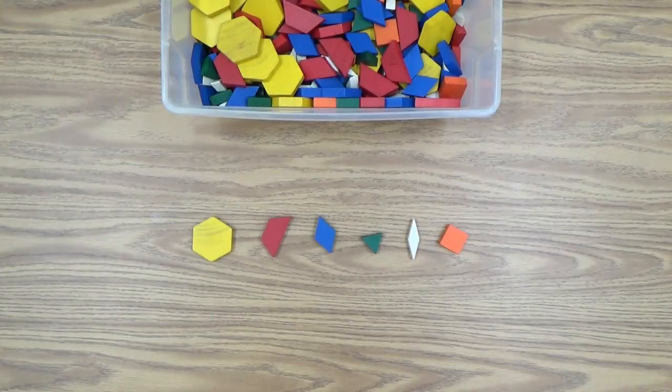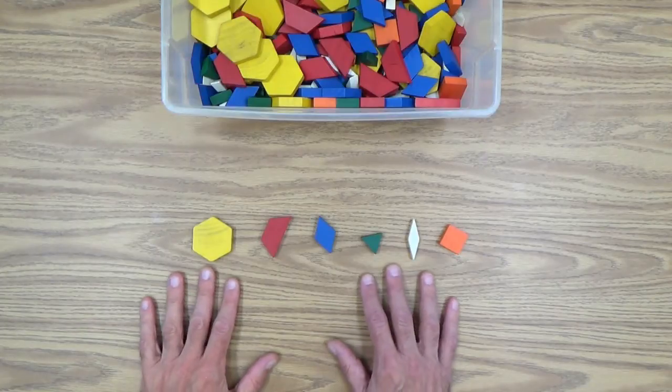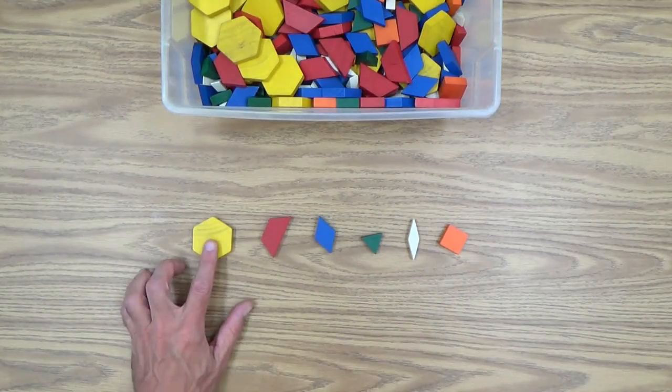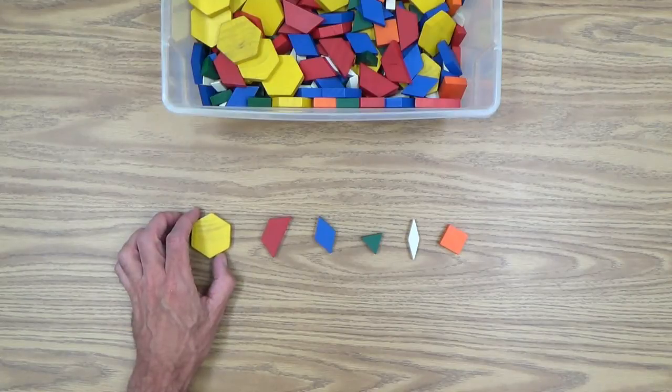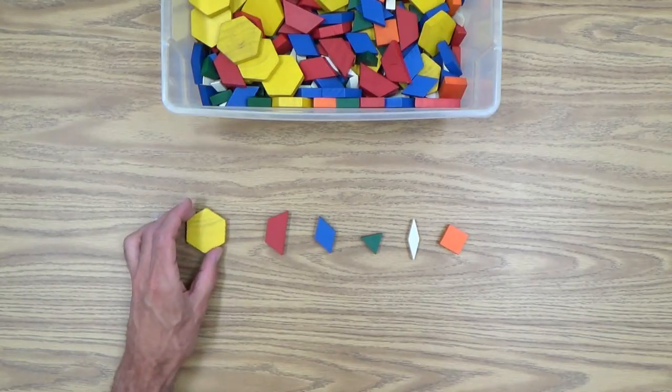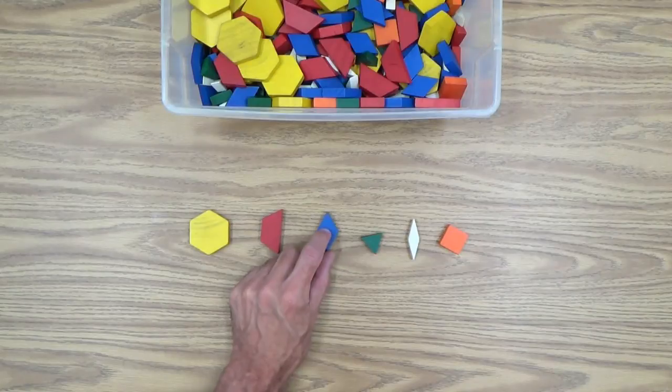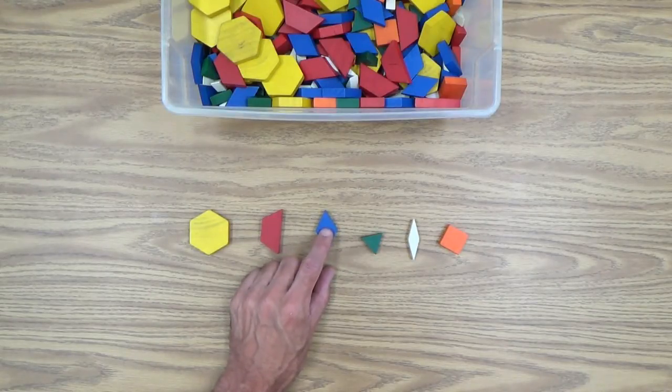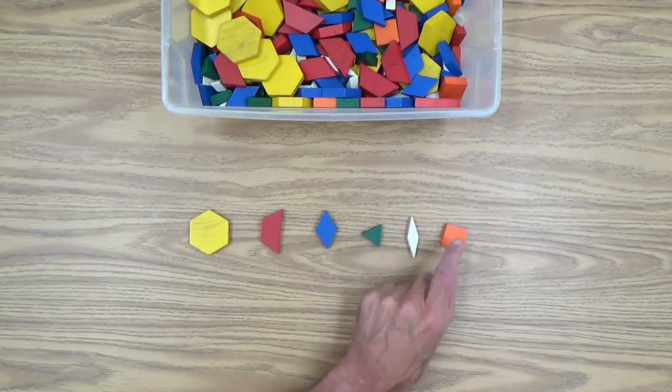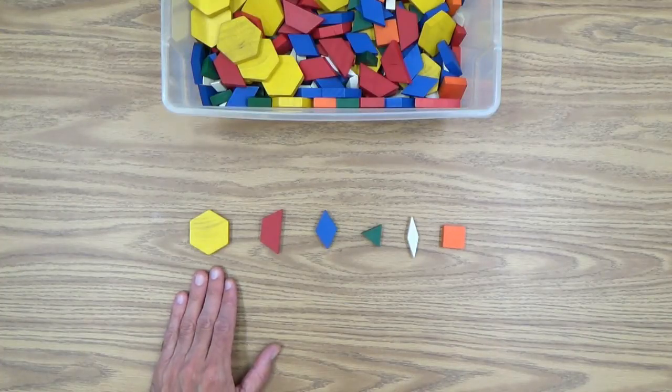So you can start out by describing these pattern blocks to your child. And as you can see, there are six different pattern blocks. And it's important to say right immediately here that all hexagons are yellow. It's not like there are different colors of each shape. They all have their, each shape has its own individual colors. So that's important to know. So you have a yellow hexagon, a red trapezoid, a blue diamond or rhombus. That's a word you can introduce to your child. Green triangle. This is kind of a beige or a white rhombus. And finally, you have an orange square. So that's how you would introduce the pattern blocks to your child.